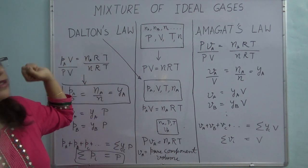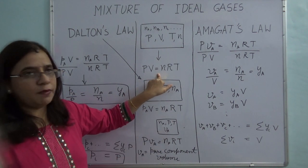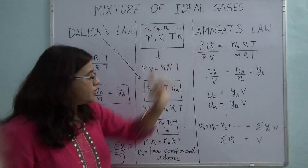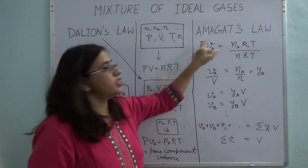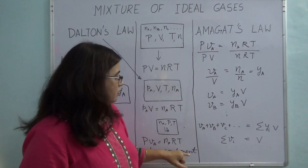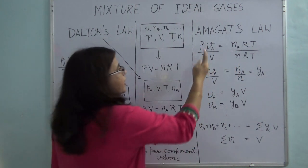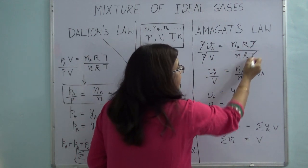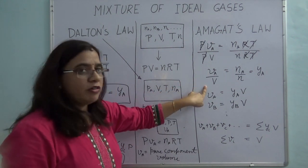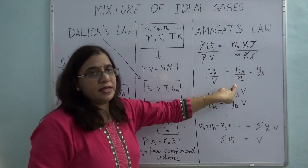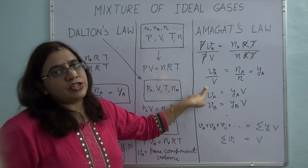Let's do the same thing as we did for Dalton's Law — divide this third equation by the first equation written for the mixture. Pressure is constant so it cancels; temperature is the same and R is constant so they cancel. I am left with Va/V = Na/N. But Na/N is the mole fraction of A, and Va/V is the volume fraction of A. So for ideal gases, volume fraction equals mole fraction.